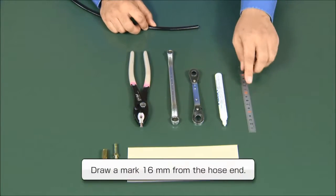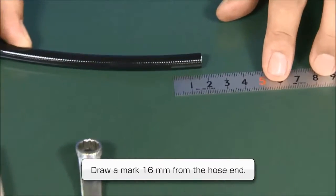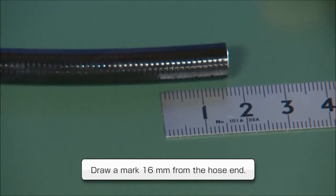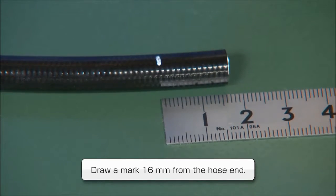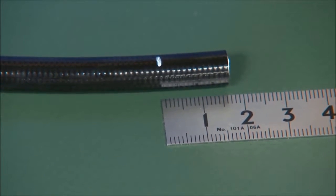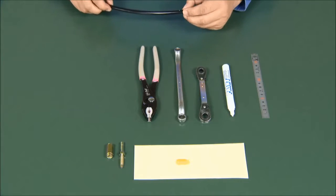Draw a mark 16mm from the hose end. Hold the hose with the pliers.